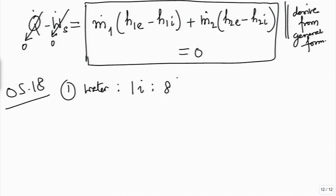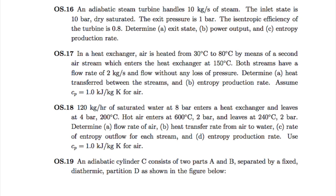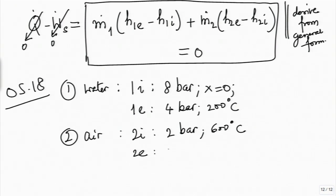Stream 1 is water: the inlet is saturated water at 8 bar, and the exit is 4 bar 200 degrees C. The other stream is hot air: it enters at 2 bar 600 degrees C and exits at 2 bar 240 degrees C—so there is hardly any pressure difference on the air side.